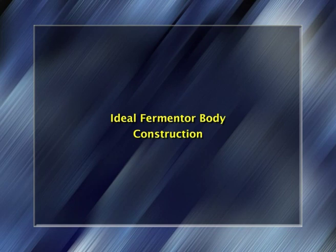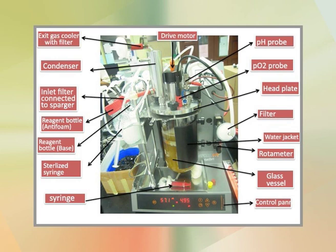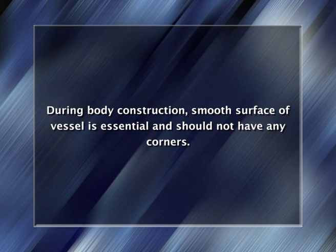Let us discuss the third part of today's topic: ideal fermenter body construction. Construction materials differ with small scale, pilot and large scale. In small scale, glass or stainless steel may be used for vessel construction. For pilot and large scale processes, stainless steel, mild steel, wood, plastic or concrete may be used. Any vessel used should not have any corners and a smooth surface is essential. The construction material must be non-toxic and corrosion-proof.